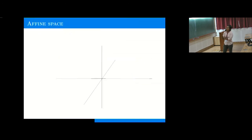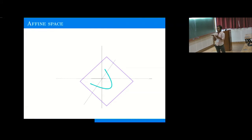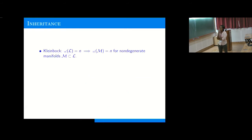Now let's look at something which is not non-degenerate. Suppose you have a parabola inside a hyperplane in R^3. The parabola is not non-degenerate inside R^3, but it is non-degenerate inside the hyperplane. So it can be expected that the parabola behaves like the hyperplane. Indeed, Kleinbock proved that if you know the hyperplane is extremal — that is, the set of very well approximable vectors has measure zero on it — then any non-degenerate manifold inside that hyperplane will also have the same property.